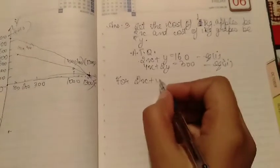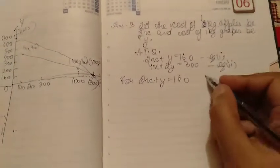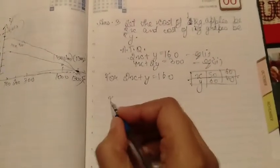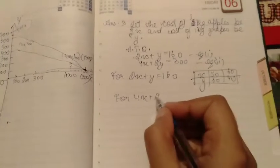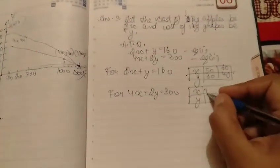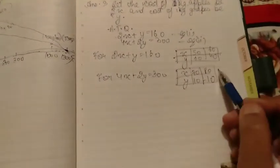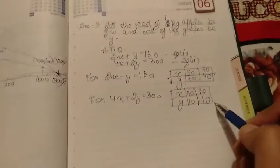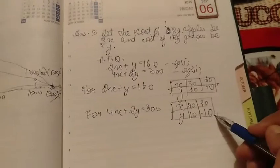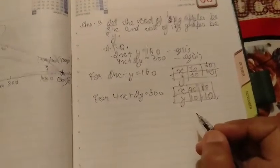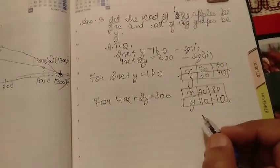For Equation 1 (2X + Y = 160): the table of values gives points like (50, 60) and (60, 40). For Equation 2 (4X + 2Y = 300): the points are (70, 10) and (80, −10). I am not making this graph — you try it yourself. If you can't, let me know in the comment section and I will show you in a video. For more educational videos, please subscribe to our channel. Thank you.